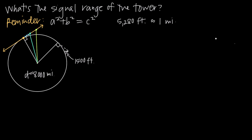So how do we apply that to a more specific problem? We've been asked: what's the signal range of a cell tower standing on the earth that's 1,500 feet tall? We know that the diameter of the earth is approximately 8,000 miles. The signal range goes in both directions, and we'll call the range d — the distance from the farthest point it can reach to the top of the cell tower.